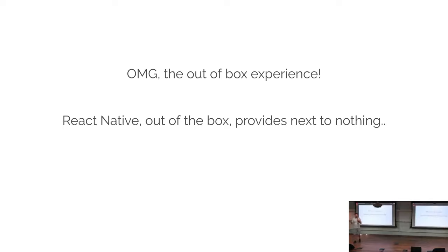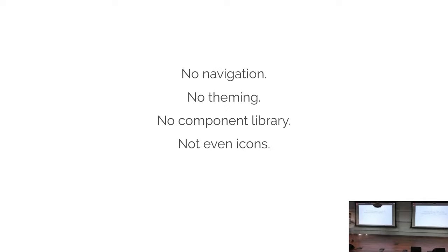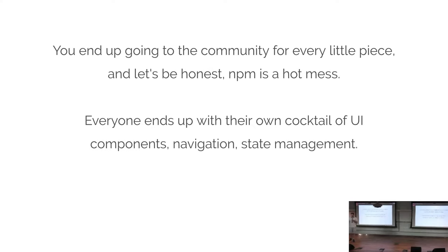Where does React Native fall over and Flutter shine? The out-of-box experience: you just don't get anything. You get a handful of components that sort of work across platforms, no navigation, no theming, no component library. If you literally render a text input onto the screen it's invisible because it has no height and no visible border. When I teach beginners and they want to put something on the screen they're like 'where is it?' — there's just no widget library, no icon, and literally no way to tell React Native to use a font family across your entire application.